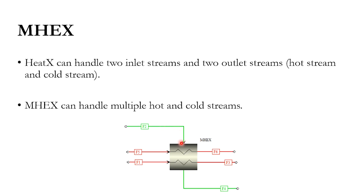This is just an example. There could be more than one cold stream, more than two hot streams — in fact too many numbers of hot and cold streams can be accommodated in this block.